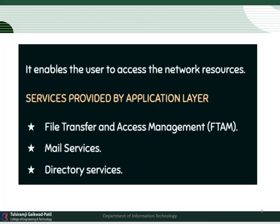Let's look at the first one — the application layer. This application layer enables the user to access the network resources. Suppose there are two devices, device A and device B. If device A wants to send data to device B, then there will be some application on device A and that application sends the data to device B to access the network resources.